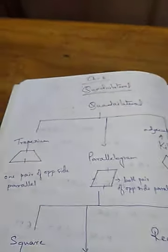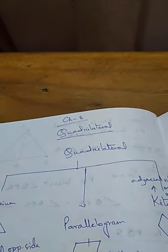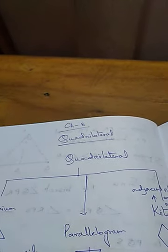Good morning students. Today I am going to start chapter 8, that is quadrilaterals. Most of you know about quadrilaterals, but I want to give you a quick recap — what is a quadrilateral? A quadrilateral is a closed figure which has four sides. Now next comes the types of quadrilaterals.